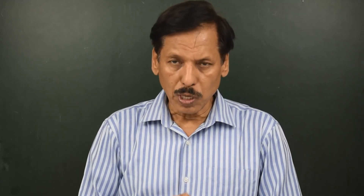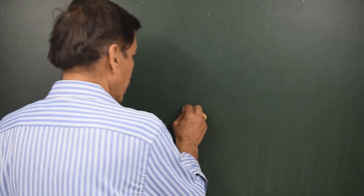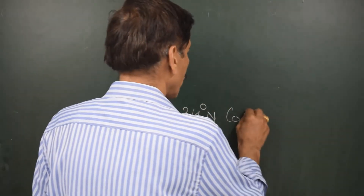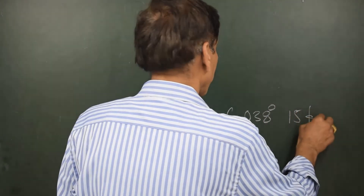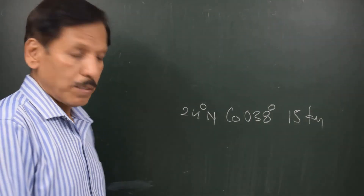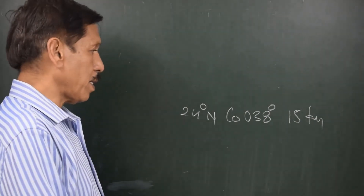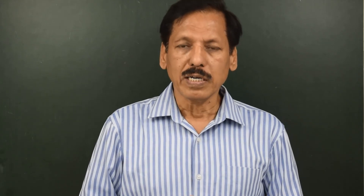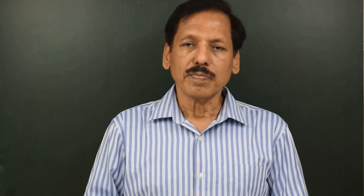Now let us take the next question. There are two gyros, both damped in azimuth, and we will compare them. One gyro is at latitude 24 degrees north, course 038 degrees, speed 15 knots. Because it is damped in azimuth, there is no damping error — only north-south speed error. The approximate formula is: tan(delta) = V cos(course) / 902.5 cos(L). Since the error is small, delta in radians equals V cos(course) / 902.5 cos(L). For equating purposes, delta = V cos(course) / 902.5 cos(L).